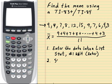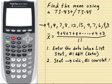So the way we do that is we hit stat. We want to arrow over to calc. And then we want to hit the number 1, which is 1 var stats, which is 1 variable statistics. And then we want to hit enter there.